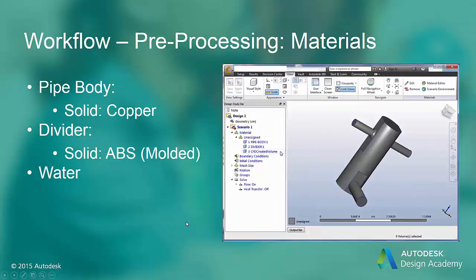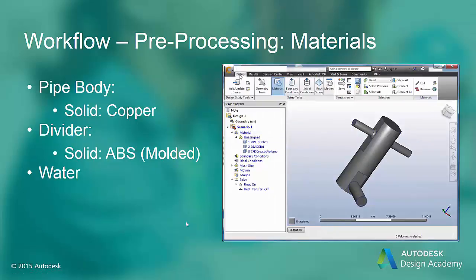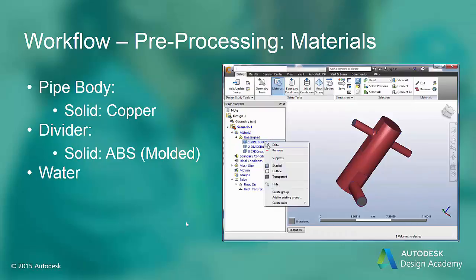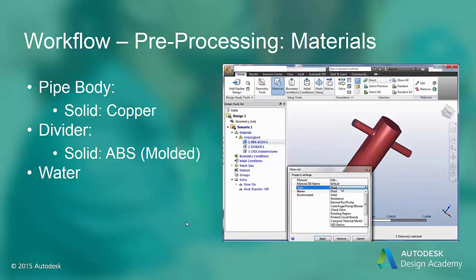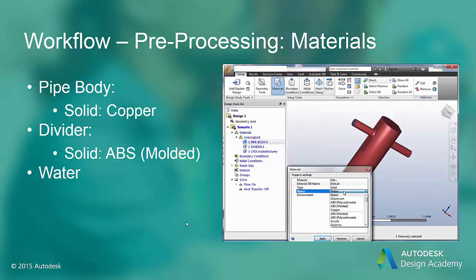Assign copper to the pipe body, then ABS molded to the mixing valve or the divider. There is now a new part that was created by Autodesk CFD when we did the void fill operation. This CFD-created volume should be assigned as a fluid, specifically water.